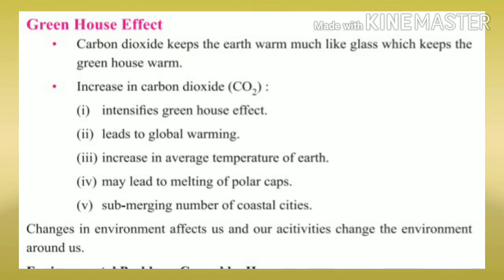Carbon dioxide warms the Earth. When the percentage of CO₂ in the atmosphere increases, it traps heat and does not allow it to escape — temperature increases. This is called the greenhouse effect. Increasing carbon dioxide intensifies the greenhouse effect, which leads to global warming. As temperature rises further, glaciers begin to melt.